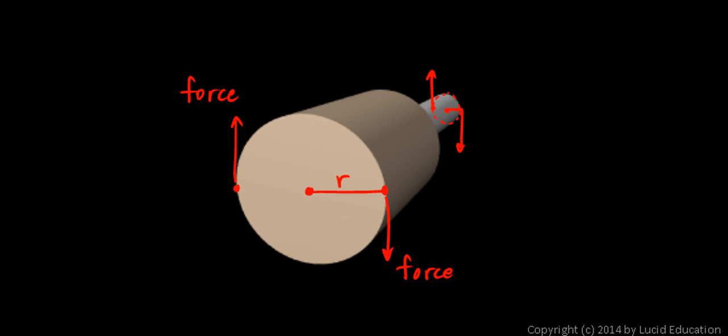And in this particular case, the way we've described it, the mechanical advantage would be five. You could say it gives us a five to one mechanical advantage, or just a mechanical advantage of five.